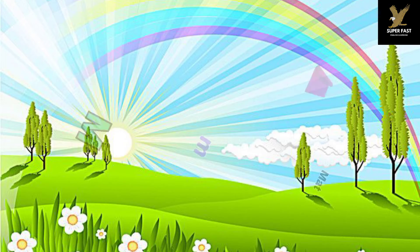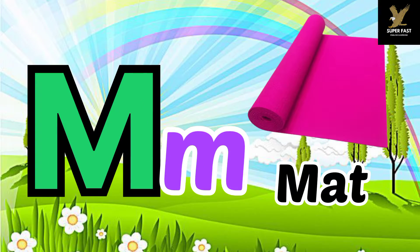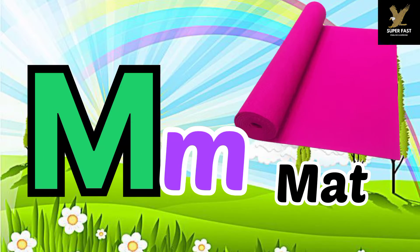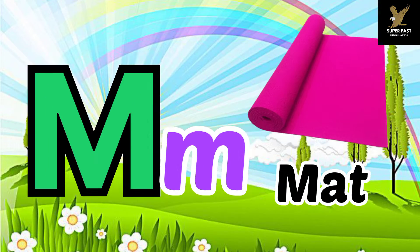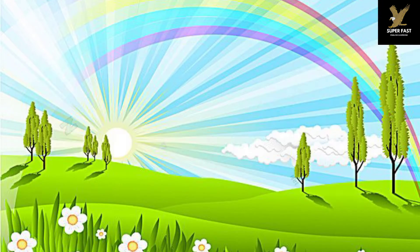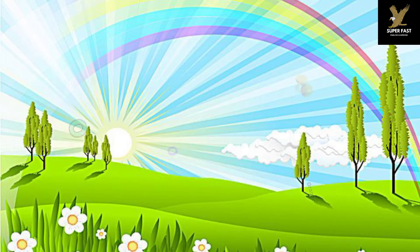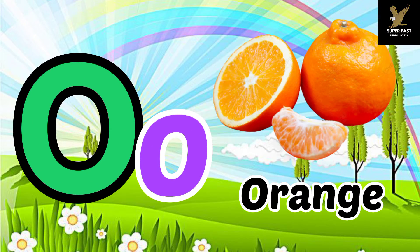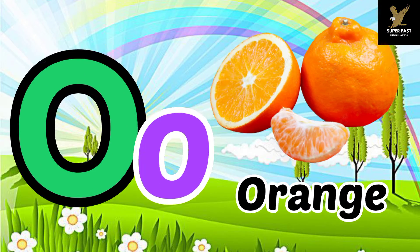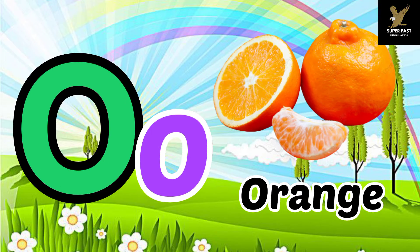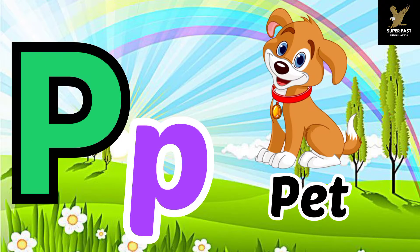M is for mat, m-m-mat. N is for net, n-n-net. O is for orange, o-o-orange. P is for pet, p-p-pet.